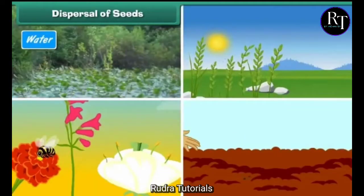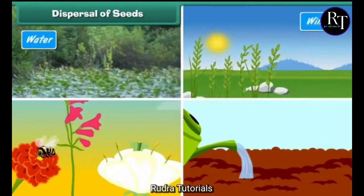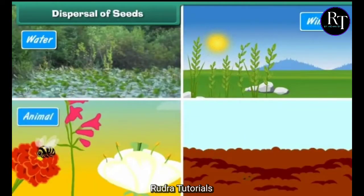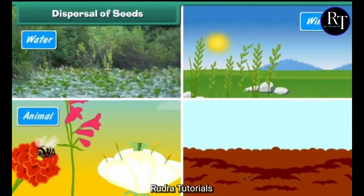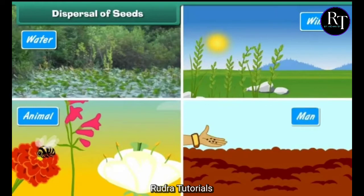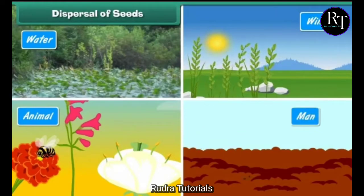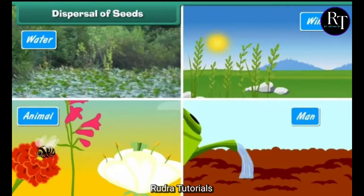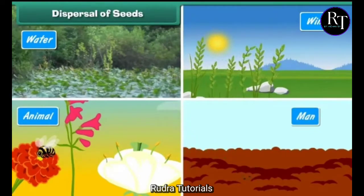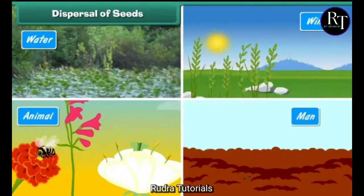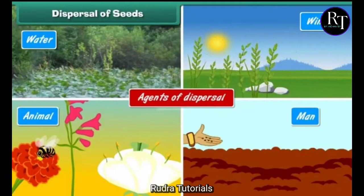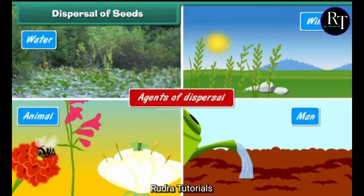Seeds are dispersed by water, wind, animals, and even man. These are known as agents of dispersal.